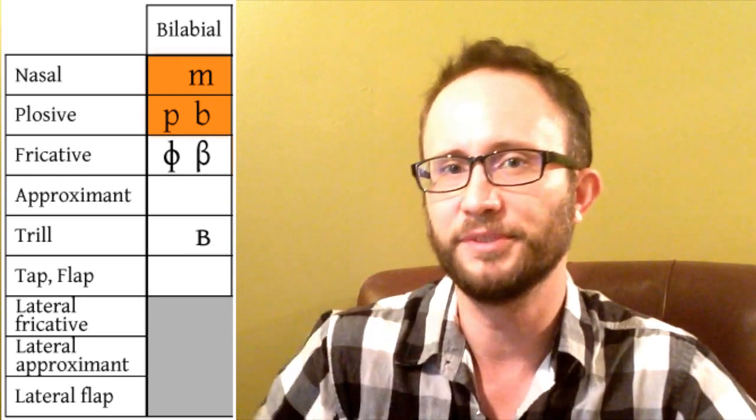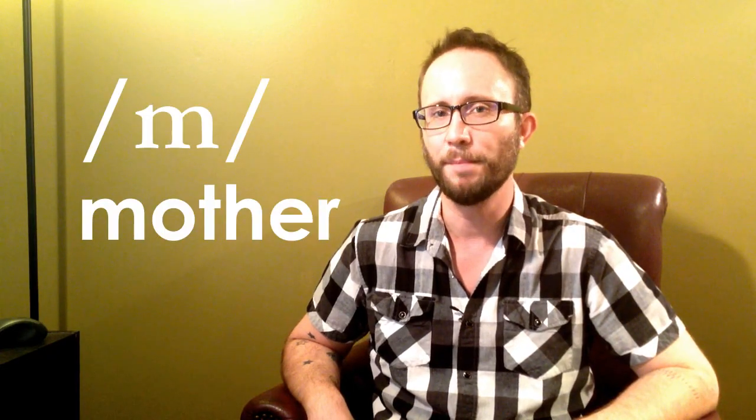The first column on the IPA chart contains the bilabial sounds — sounds that are made with both lips. 'Bi' means two, 'labial' means lips. The bilabial sounds in English are 'buh' as in boy, 'puh' as in pirate, 'muh' as in mother, and 'wuh' as in whale.